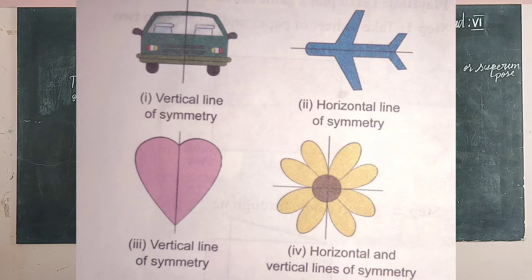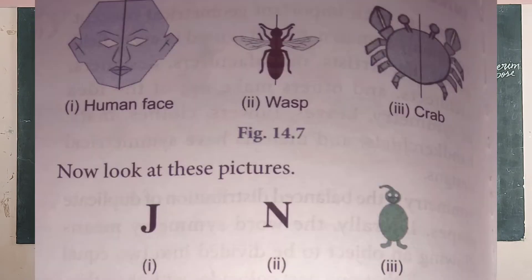Look at the pictures. The first one is a human face, next is a wasp, and the next is a crop. These are examples of symmetry. This is also the same — these are symmetrical figures in nature.